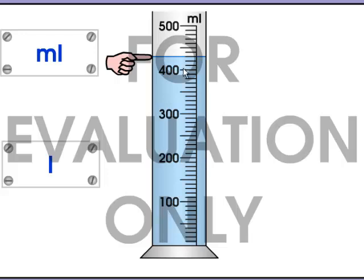You're counting by tens. Here's 400, 410, 420, 430 milliliters.